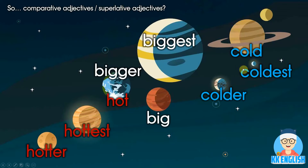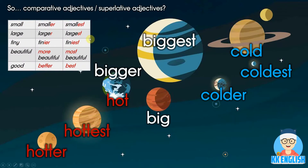Superlative adjectives mean you put '-est' at the end of the adjective — it means 'the most' or 'the -est.' Now let's look at the spelling rules table: you can directly add '-er'/'-est', or if the word already ends in 'e' just add '-r'/'-st'. For words ending in 'y', drop the 'y' and add '-ier'/'-iest'. For longer words with three or more syllables, use 'more' or 'most' before the adjective. And some words are irregular, like good → better → best.